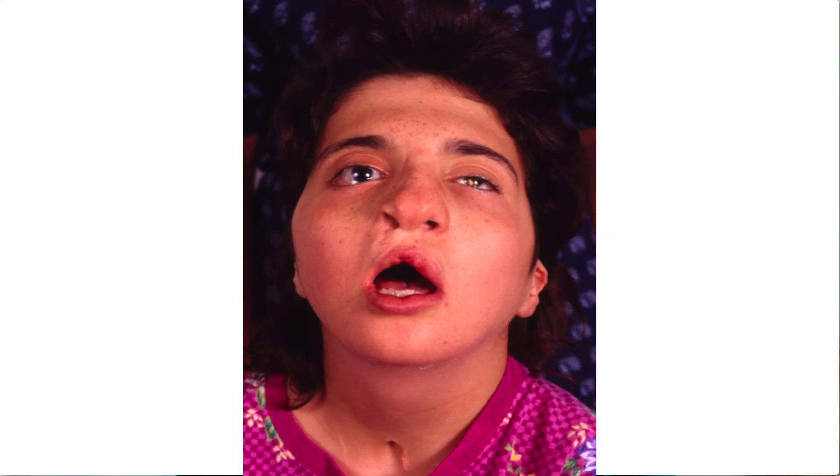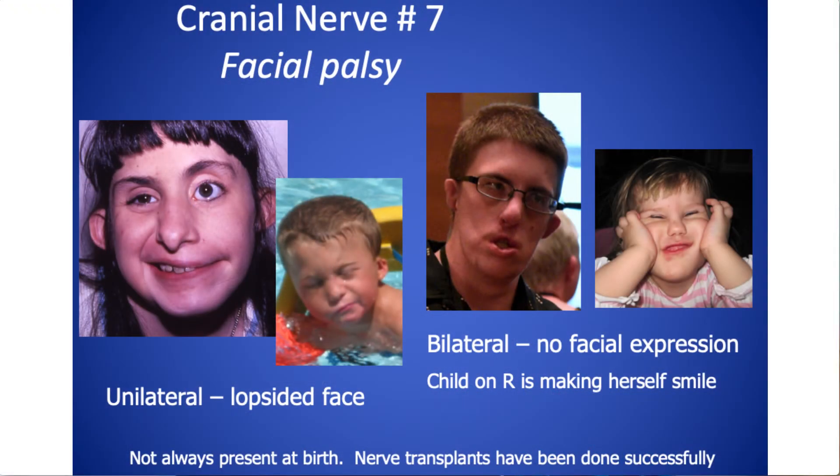Facial palsy involves cranial nerve number seven. The facial nerve animates the whole side of the face — when you smile or cry, your cheeks move, your mouth smiles, your ears squinch up. That whole thing is from cranial nerve seven. If you have a unilateral facial palsy, you'll have a very lopsided face, especially when smiling or crying. If there's a bilateral facial palsy, there's no facial expression at all. A bilateral facial palsy can also interfere with sound production, so speech may be even more difficult to understand beyond what results from hearing loss.